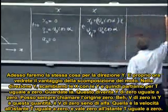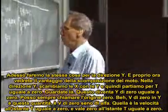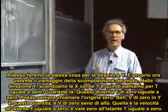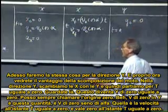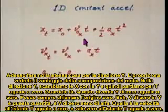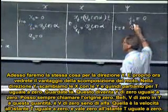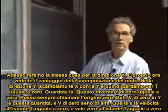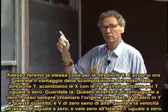Now we're going to do this for the y direction, and here you begin to see the gain of decomposition. In the y direction, we replace x by y. At t equals zero, y zero equals zero. We get V zero y times t, where V zero y is V zero sine alpha. That is the velocity at time zero, and the one-half a_y t squared term is zero at time zero.